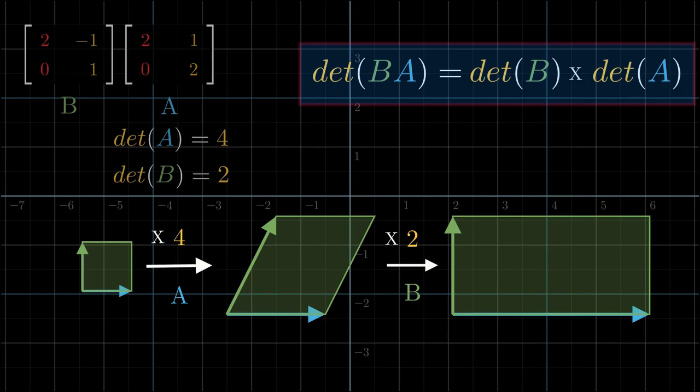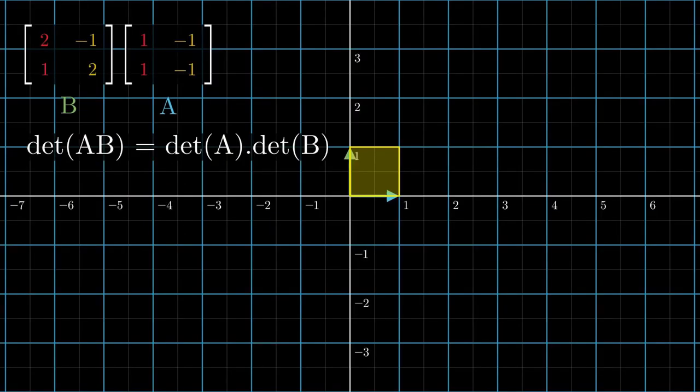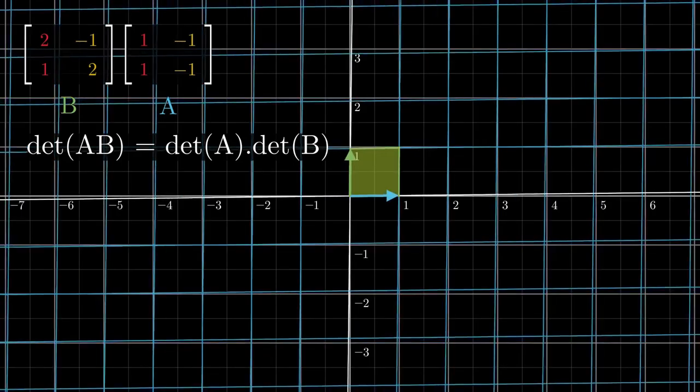Also, there is nothing special about the matrices A and B chosen here. This property applies to any number of matrix compositions, as long as each matrix represents a linear transformation. As an exercise, try to check if the formula makes sense when one of the matrices collapses space into lower dimensions.